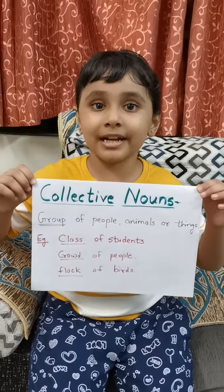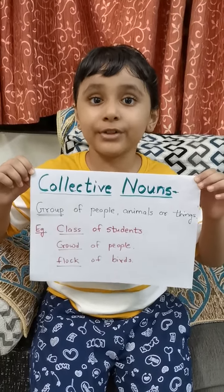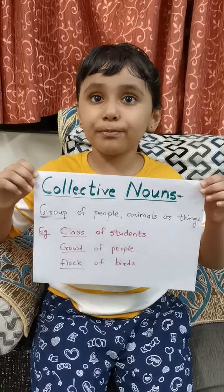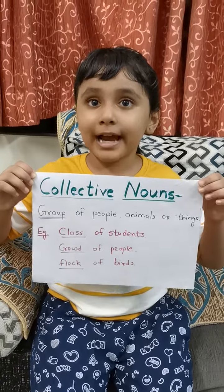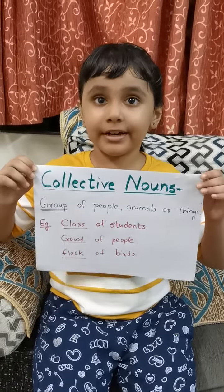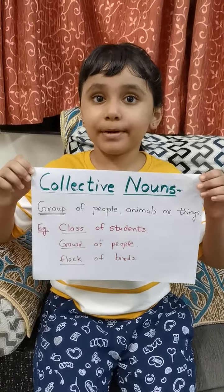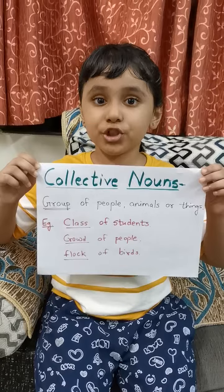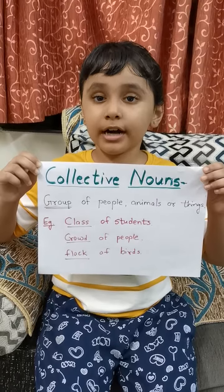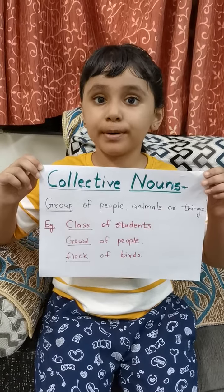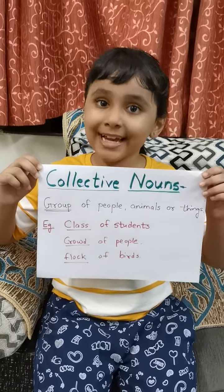Third is collective noun. It is the group of people, animals or things. Example: a class of children, a crowd of people, a flock of birds. Thank you.